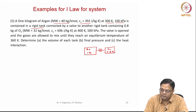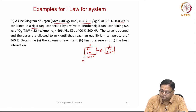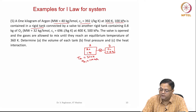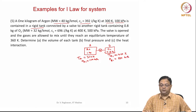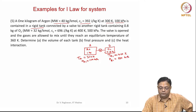Let this be tank A and tank B. TA1 equals 300 Kelvin, PA1 equals 100 kilopascals. For tank B, TB1 is given as 400 Kelvin and PB1 is given as 500 kilopascals. They are separately present in chambers A and B as shown in the figure.